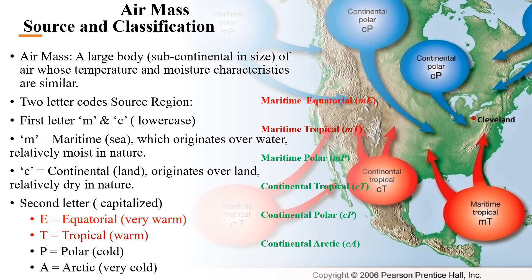The second letter, which is a capital letter, tells us about the temperature situation according to position. In the equatorial region, we have strong incoming solar radiation and hot temperatures. Tropical (T) is also hot. As we go toward the poles and Arctic regions, it would be cold. So by looking at the two-letter code, we can understand the characteristics of the air mass.